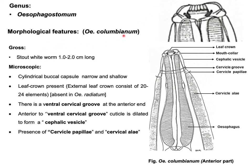Regarding morphological features of Esophagostomum columbianum: grossly, the parasite is whitish in color and about two centimeters in length. Microscopically, the buccal capsule is cylindrical, narrow, and shallow. There is both an internal and external leaf crown — however, for Esophagostomum radiatum the leaf crown is absent. There is a ventral cervical groove at the anterior end of this parasite.